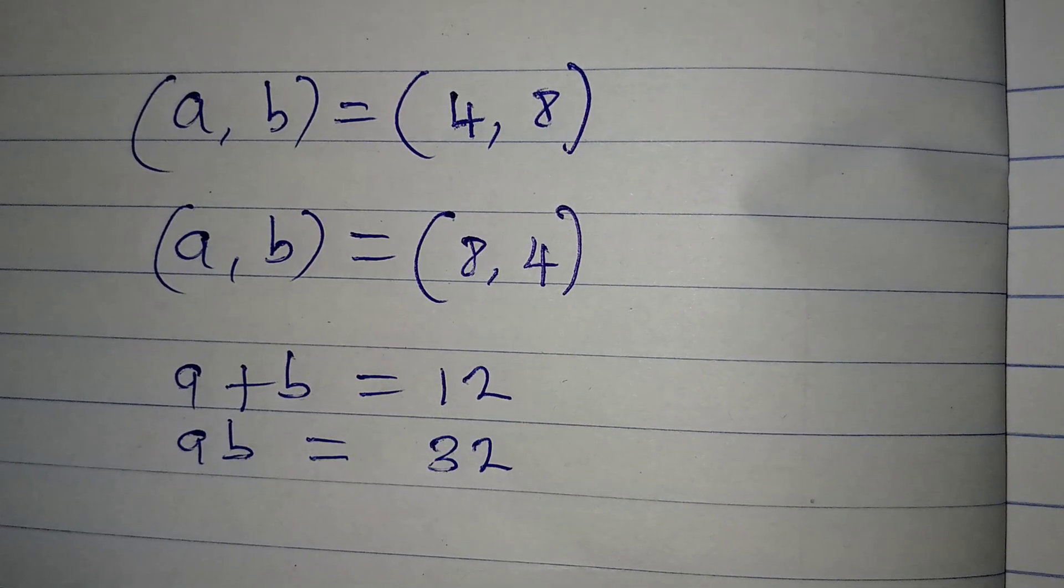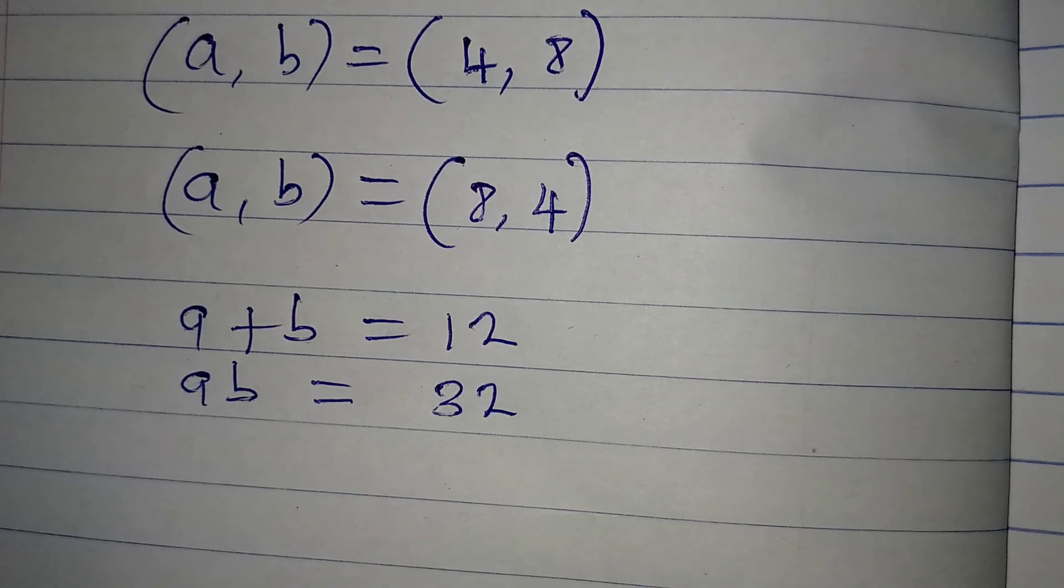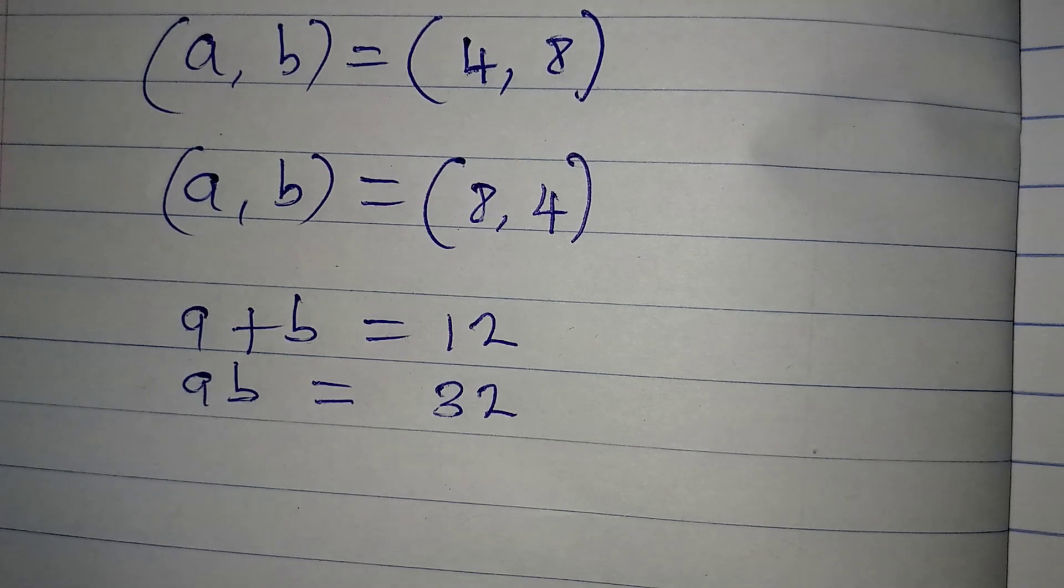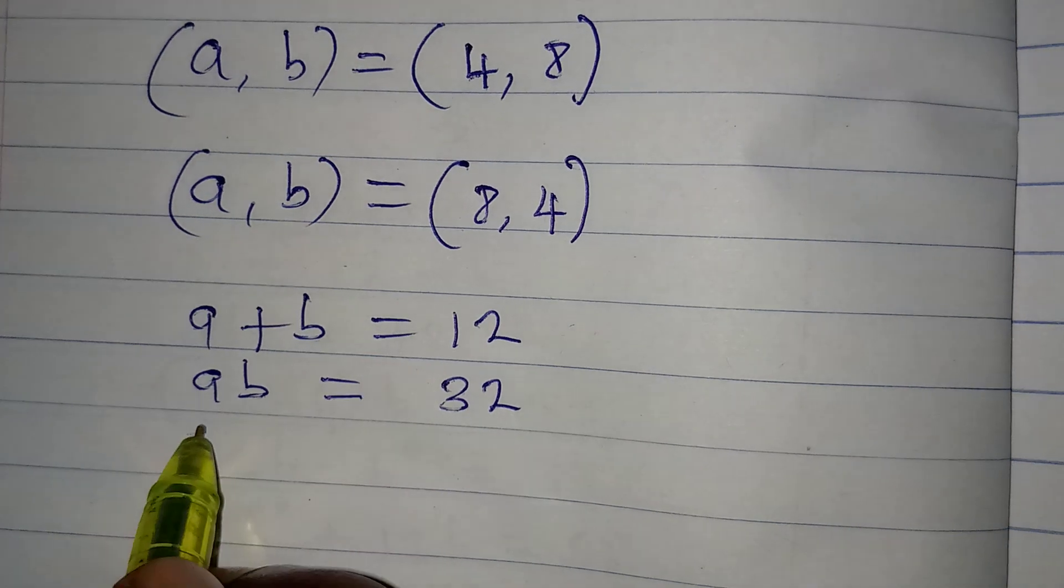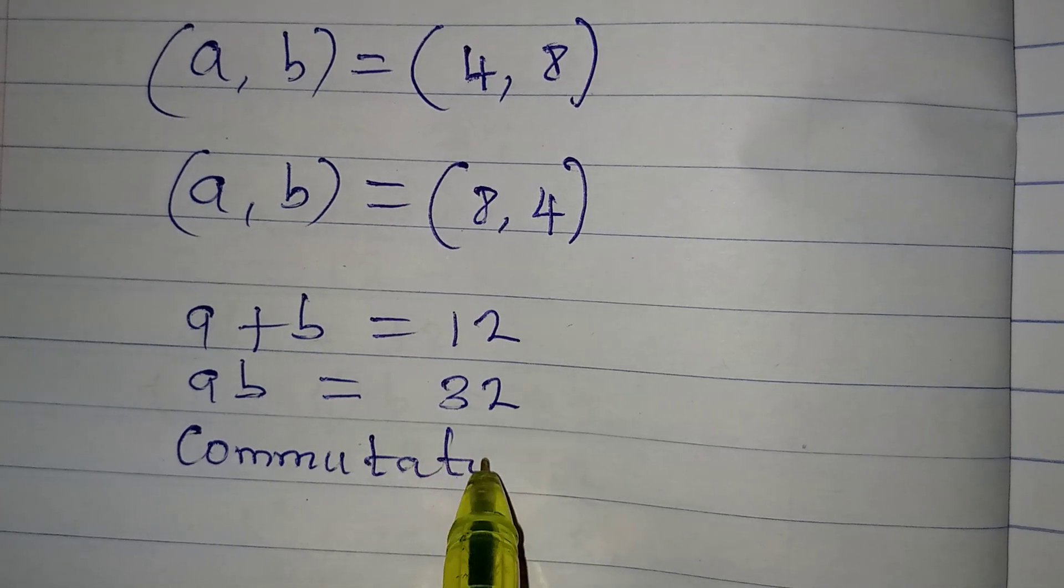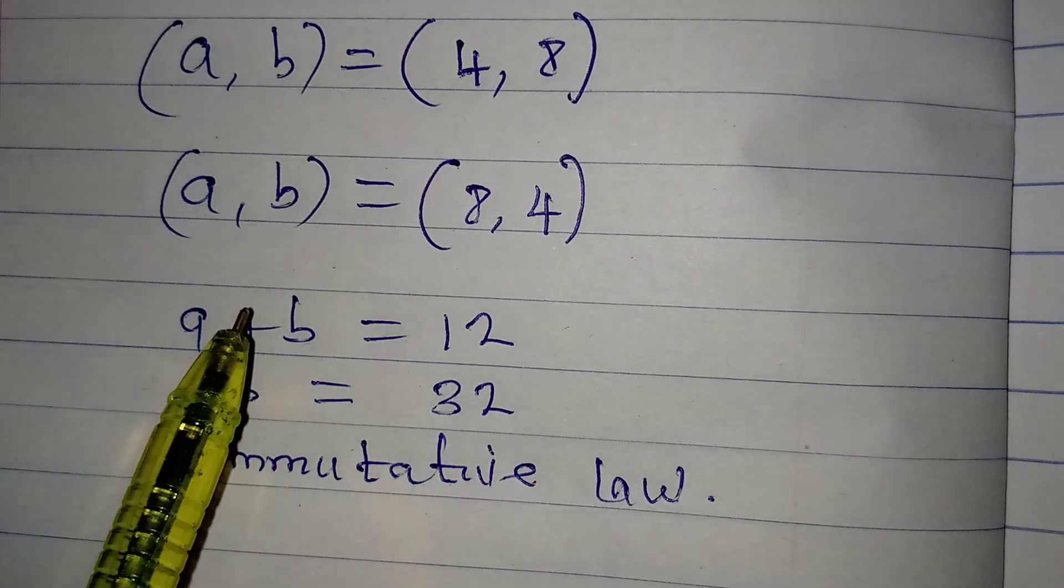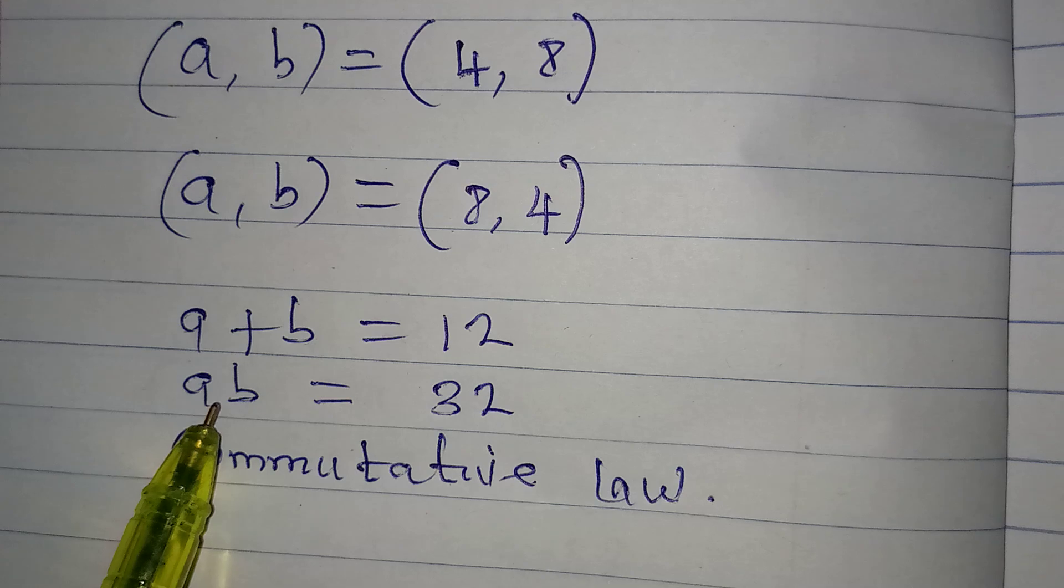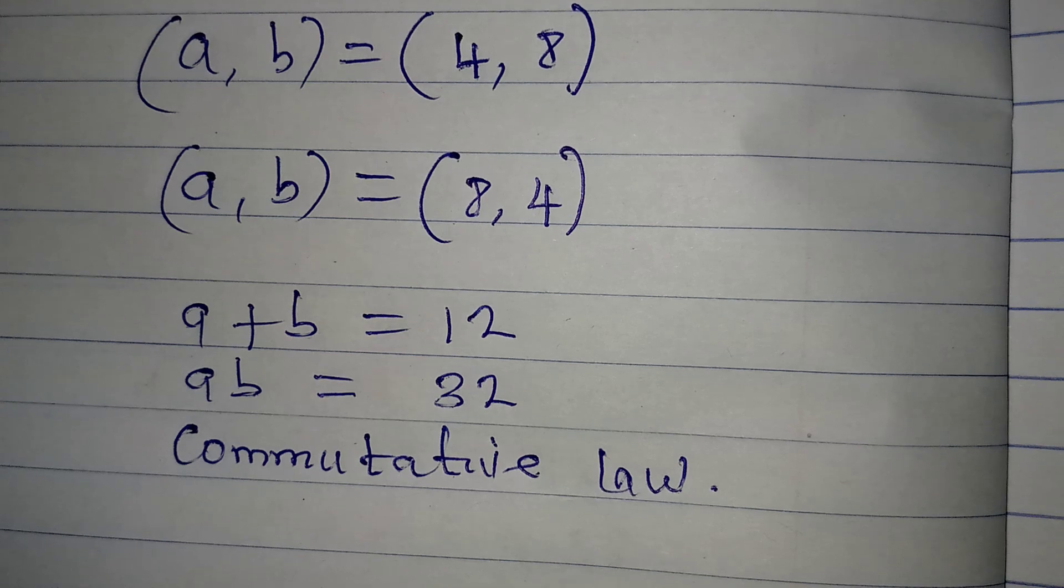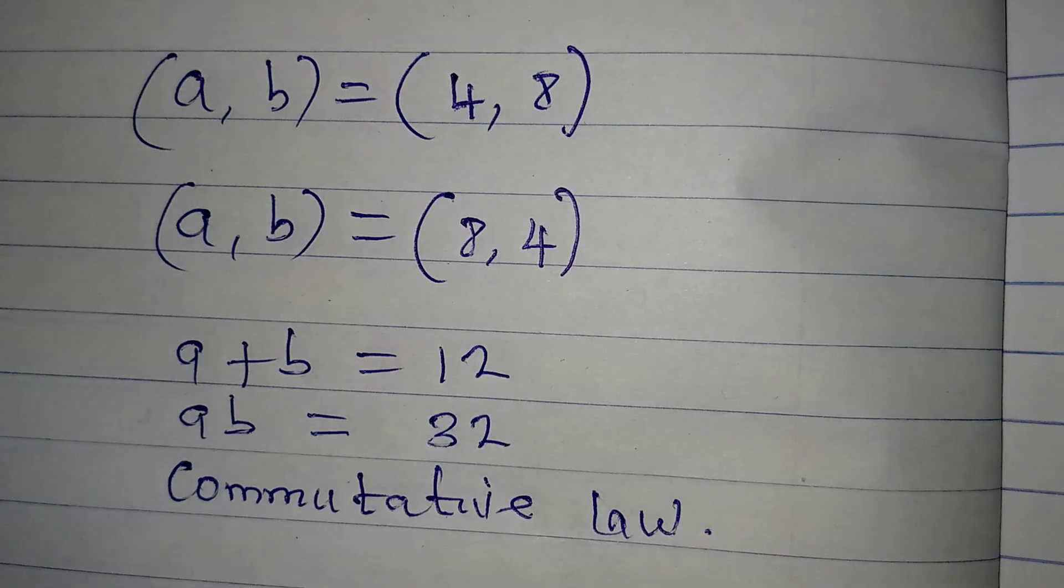So, it does not really matter the arrangement. And why is that? Because addition, which is here, and multiplication, which is here, both of them obey commutative law. It does not matter the arrangement. That's why 4 and 8, or 8 and 4, are both satisfying the equation.